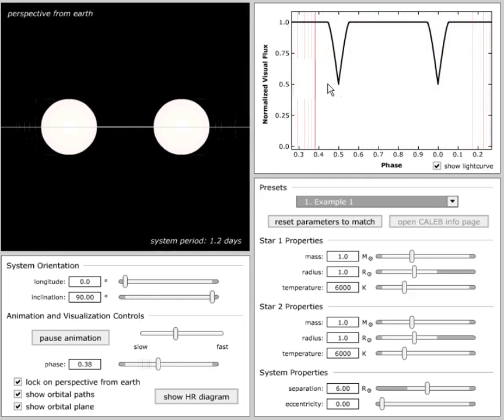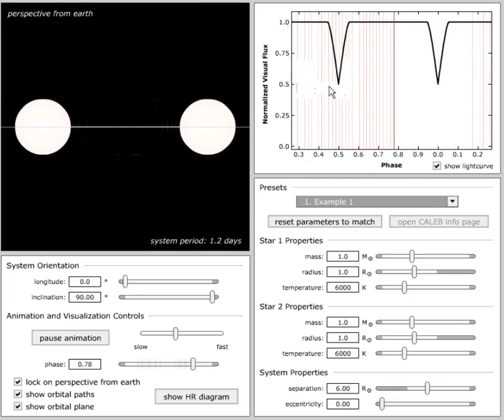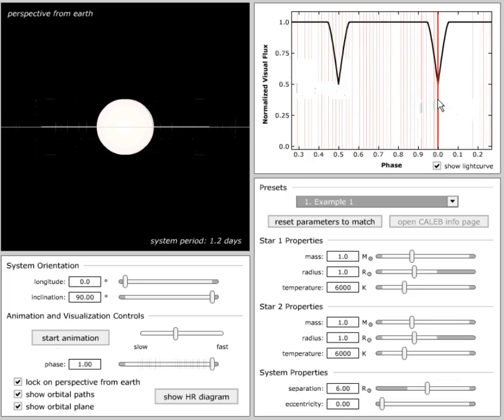Note that the depth of the eclipse, the amount of light that's missing, the eclipse depth, is 50%. Meaning that in both eclipses, half of the total amount of light coming from the system is eclipsed.